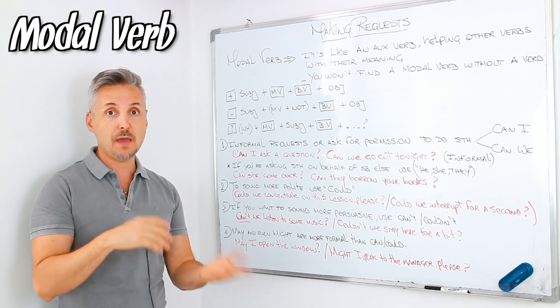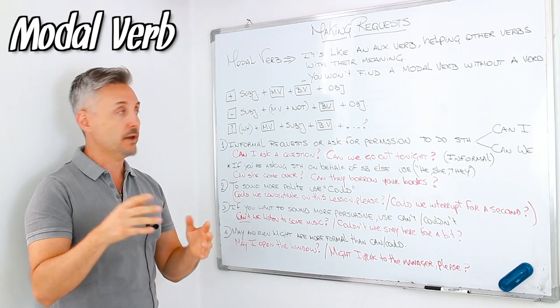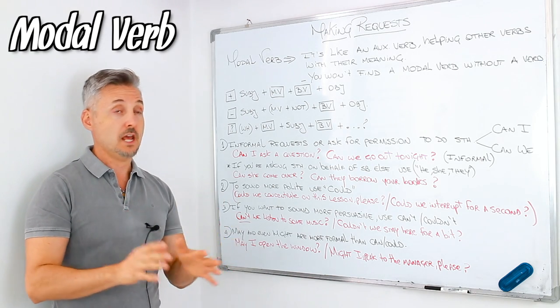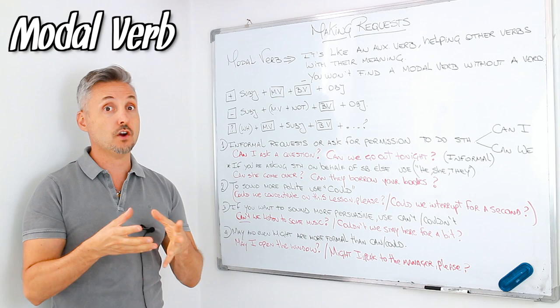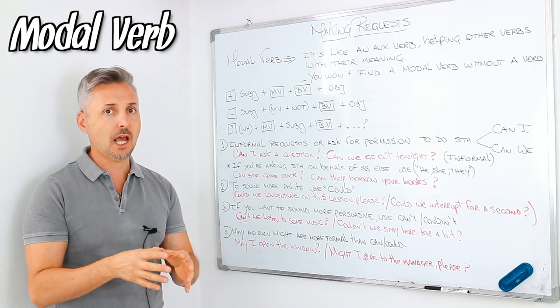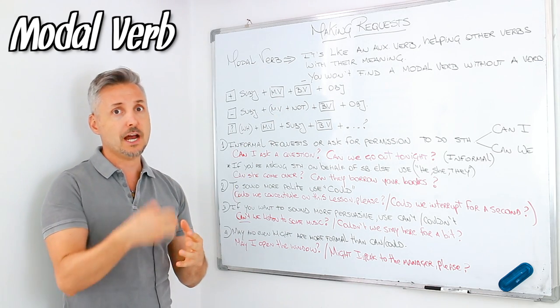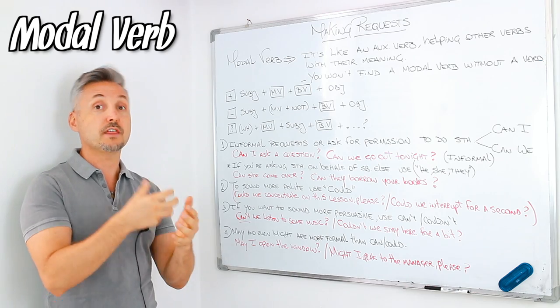But a modal verb is like an auxiliary verb that helps other verbs with their meanings. We have can, could, may, might, and so on. You won't find a modal verb without a main verb. We always need a verb, another verb, with a modal verb.